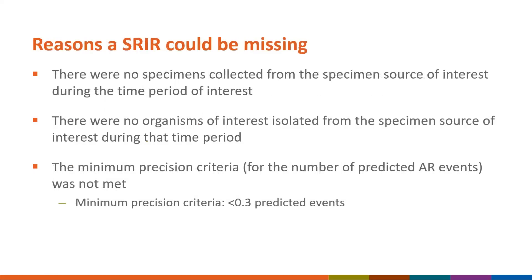There are various reasons an SRIR value could be missing in an NHSN report. First, if there were no specimens collected from the specimen source of interest during the time period, the facility is not eligible to receive an SRIR and the value would be missing. Similarly, if there were no organisms of interest isolated from the specimen source during that time period, the facility is ineligible. Lastly, values will be missing if the minimum precision criteria for the number of predicted AR events is not met. For example, if the number of hospital onset VRE infections predicted is less than 0.3 for a quarter, then the SRIR value would not be shown even if the facility does report hospital onset VRE events.